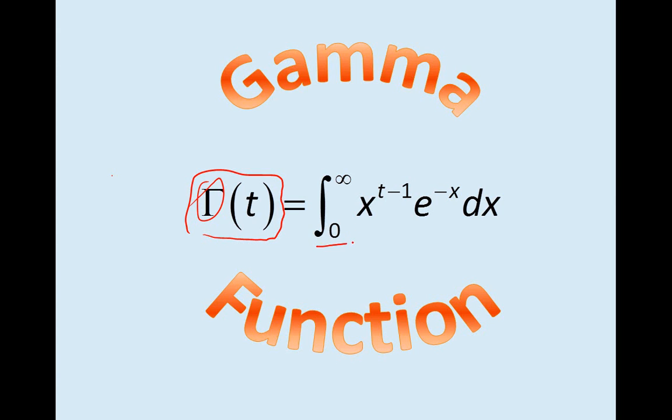Now, the gamma function is an improper integral. As you can see here, it goes from 0 to infinity. And notice that the gamma function has the independent variable t, however, the integral we're evaluating with respect to x.